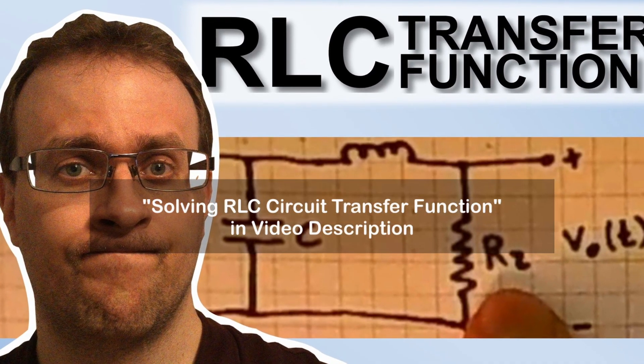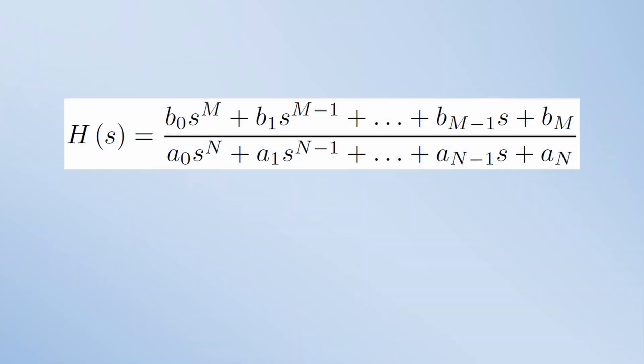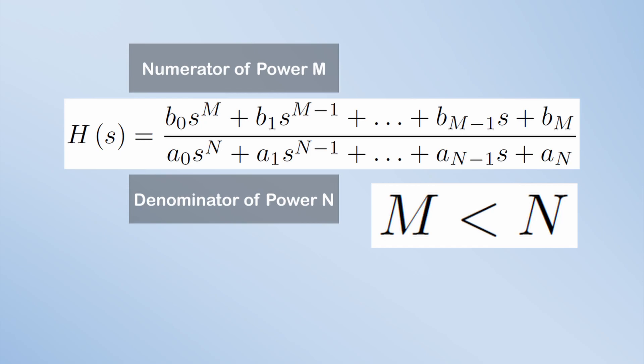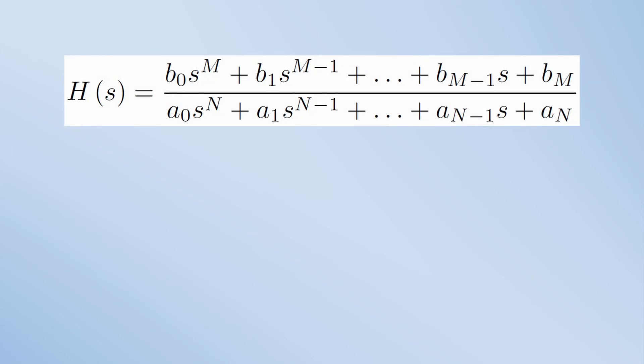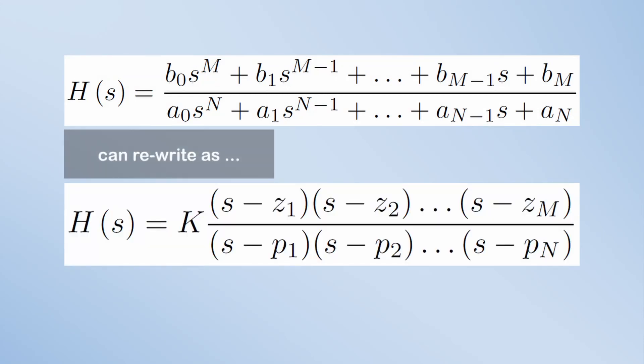We've seen some examples of this in previous videos. It turns out that for a real physical system, the power of the polynomial in the denominator should be greater than the power of the polynomial in the numerator. But what's more important right now is that you can factor both polynomials. This means that you can find their roots and rewrite each polynomial as a product of root expressions. When the value of s is equal to a root, then the corresponding root expression will be equal to zero.